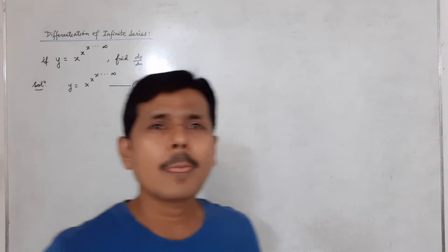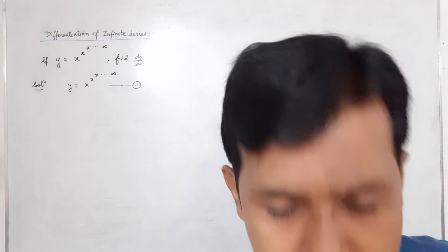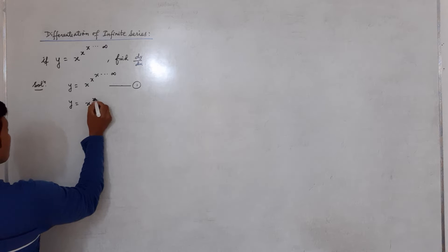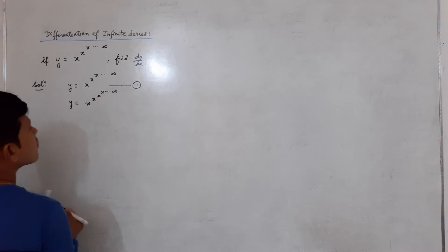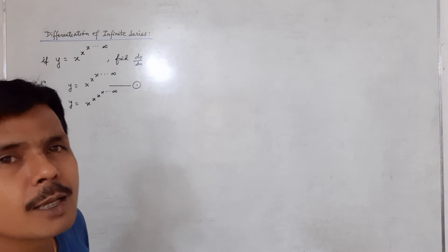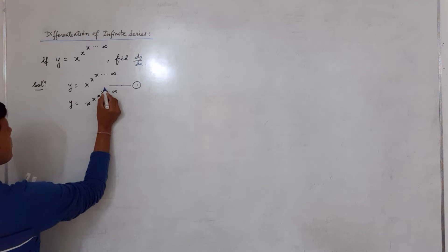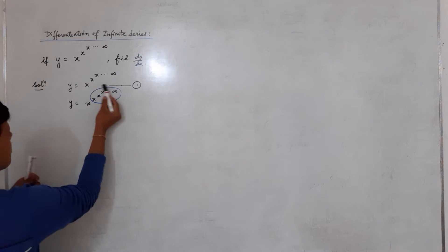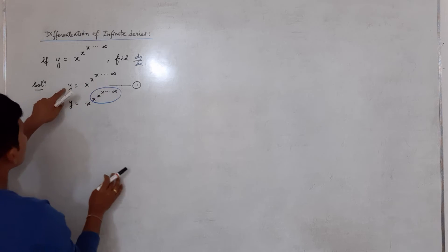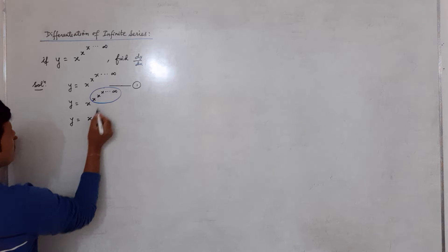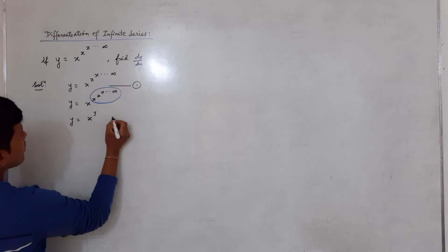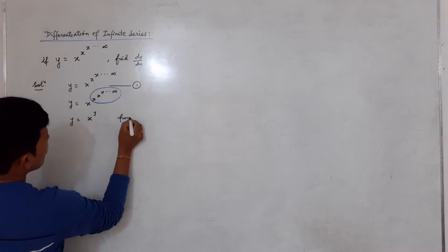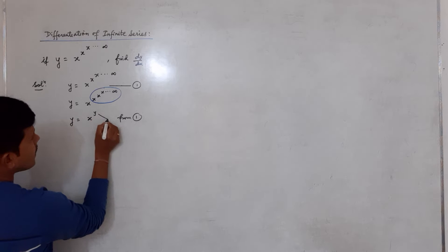Now when I say infinite series, that means I can write x to the power x to the power x to the power, as many times as you want. Now, I am taking this portion under a blue circle — this portion looks like the original expression and is equal to y. So in place of this, I am going to replace it with y, and this substitution has come from equation number one.